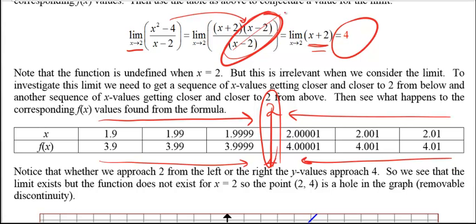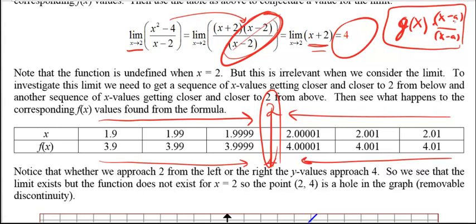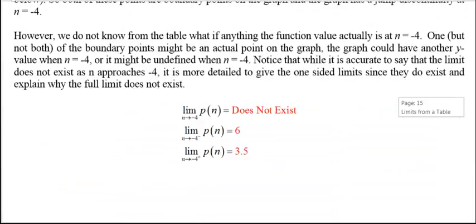You can use this technique in general: take any function g of x and multiply it by (x − a)/(x − a). If the original g of x was defined at a, this new function will now have a hole in it at x = a.